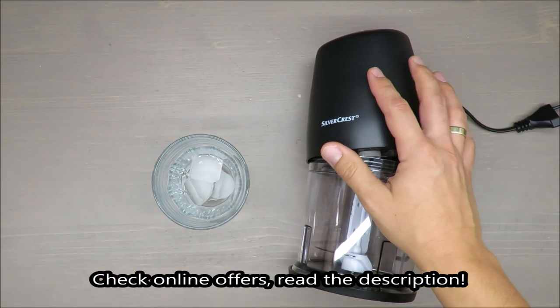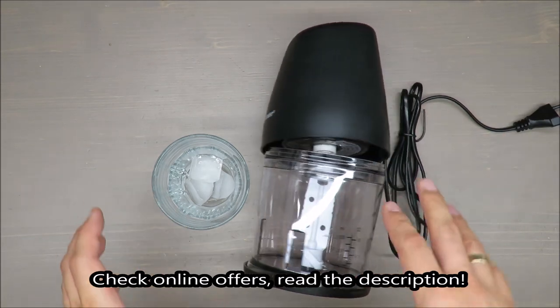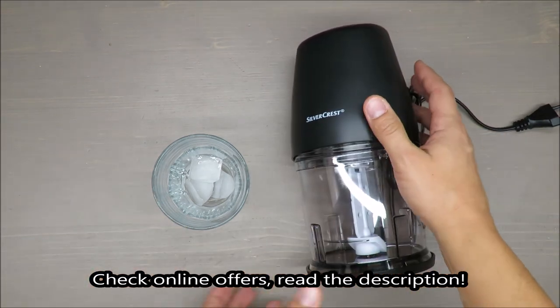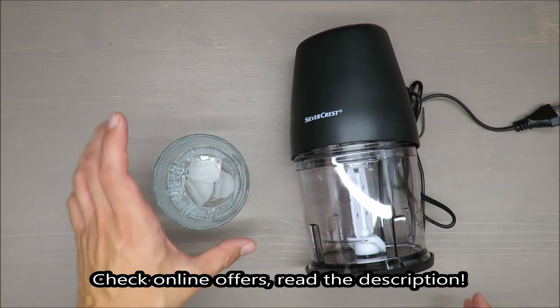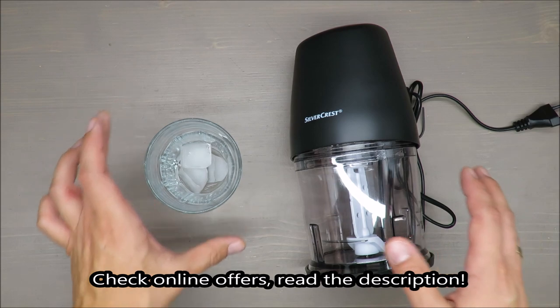Hello everybody, this is Out of the Box Unboxing. In today's episode I'm going to test this mini chopper from Silvercrest. I will test it with ice cubes, which I've chosen for this purpose because in my opinion ice cubes are the most problematic.